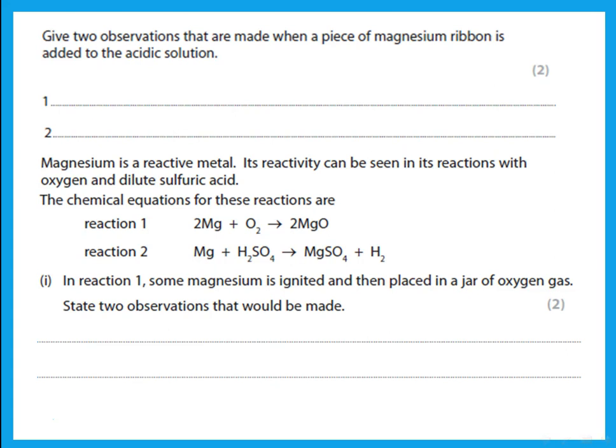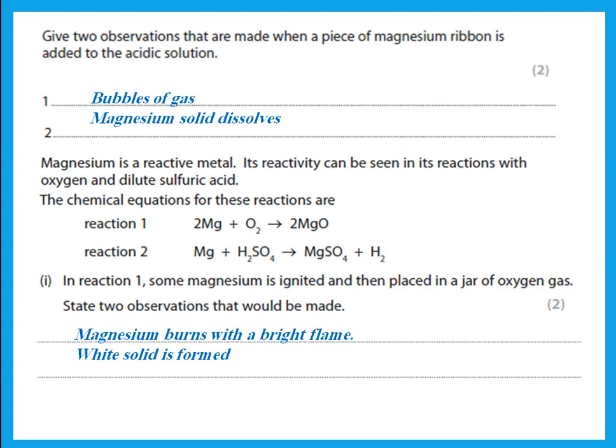Give two observations when a piece of magnesium ribbon is added to acid. First, bubbles of gas are produced. Second, the solid magnesium piece begins to disappear or dissolve. When magnesium is ignited and placed in a jar of oxygen, the observation is: magnesium burns with a bright flame, and a white solid is formed, which is magnesium oxide.